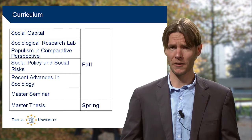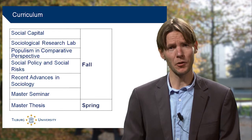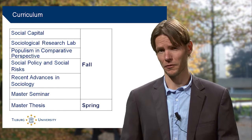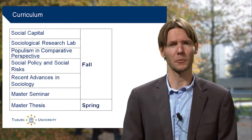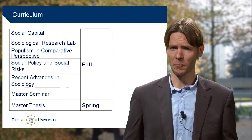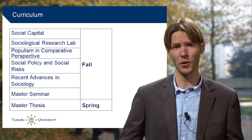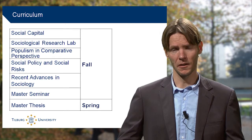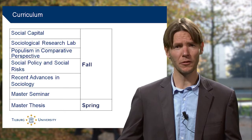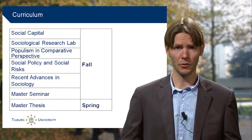Running across both block one and two, there is another course called Reasoned Advances in Sociology. There you learn how to do a good analysis of the available literature. Existing studies are really important for identifying new problems. To make progress in science, you need to know what is in the literature and how to review those studies — which is quite difficult, and this course teaches you how to do that.